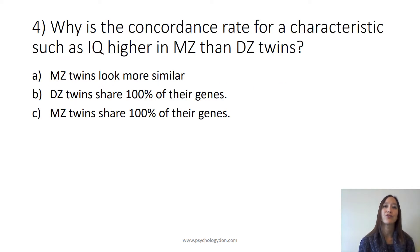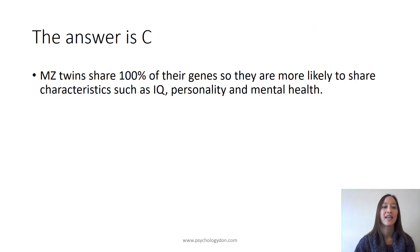Question 4: Why is the concordance rate for a characteristic such as IQ higher in MZ than DZ twins? Is it A, MZ twins look more similar; B, DZ twins share 100% of their genes; or C, MZ twins share 100% of their genes? The answer is C. MZ twins share 100% of their genes, so they are more likely to share characteristics such as IQ, personality, and mental health.